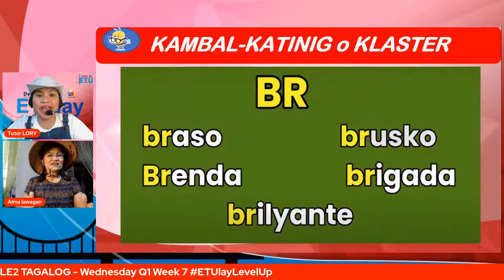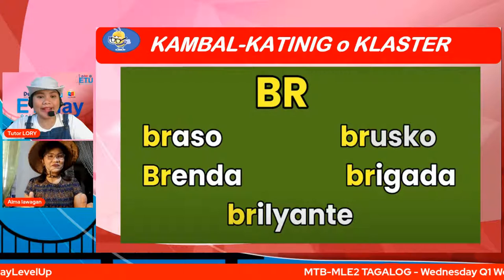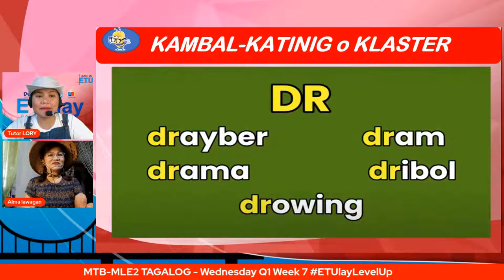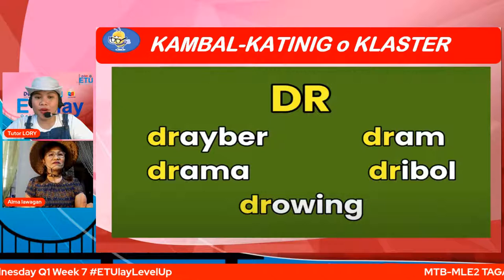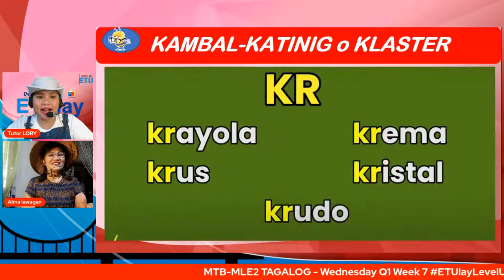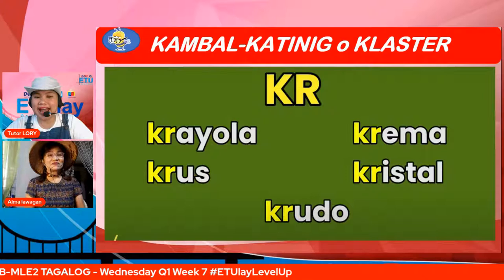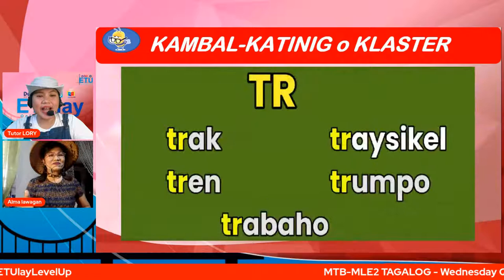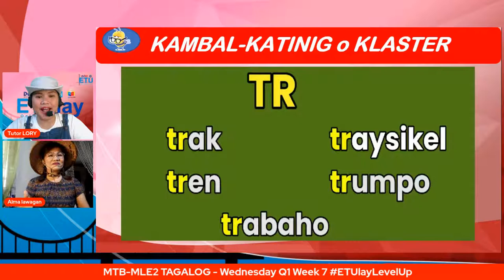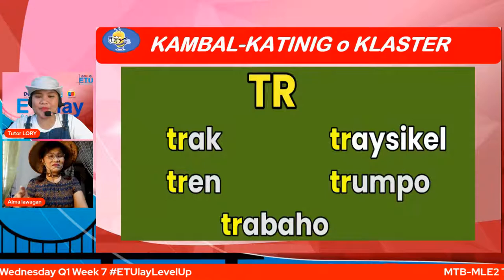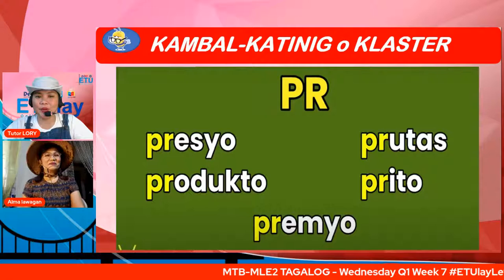Ang susunod natin ay TR. DR — driver, drum, drama, dribble, drawing. Ang susunod ay KR/CR: crayola, crema, cruz, kristal, krudo. Kambal katinig o cluster na TR na may tunog na TR: track, tricycle, tren, trumpo, trabaho. Meron pa — PR na may tunog na PR: presyo, prutas, produkto, prito, premyo. At ang huli namin ay DY na may tunog na J: jacket, jeep, janitor, jario, jamante.